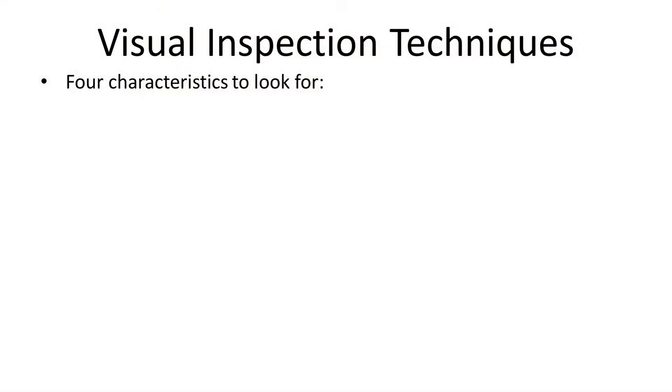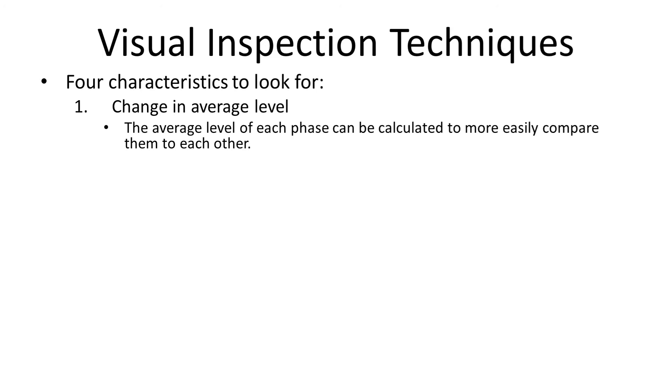Whenever you're doing this kind of visual inspection — looking for stable levels and trends and judging things like latency — there are four characteristics you should look for.